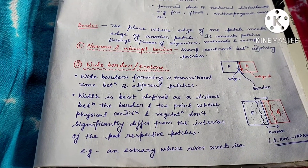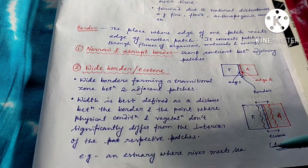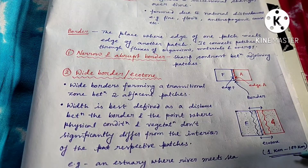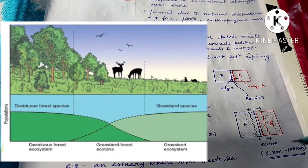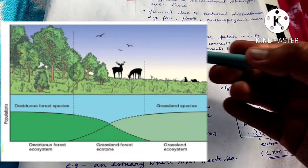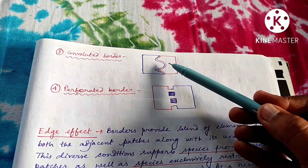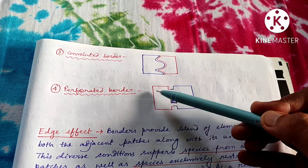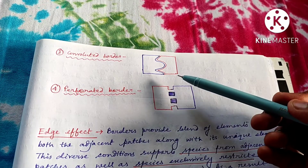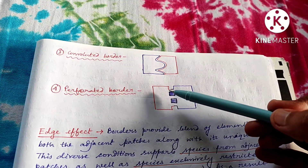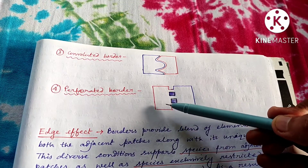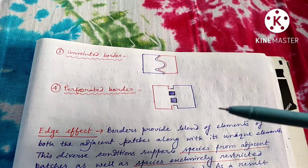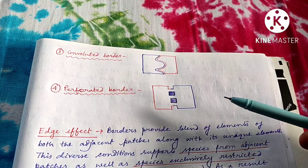An estuary is a good example of an ecotone, where a river meets the sea. The size of an ecotone may vary from 1 kilometer to 100 kilometers — it is a wider kind of border between two adjacent patches. The border can be of a straight line like a narrow border, or it can be convoluted. The border may be tight with no perforation, or it may have gaps — that kind of border is known as a perforated border. These are the four types of borders, and ecotone is a wider kind of border among them.